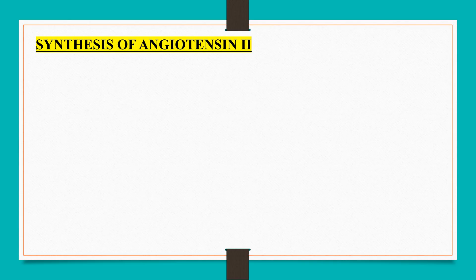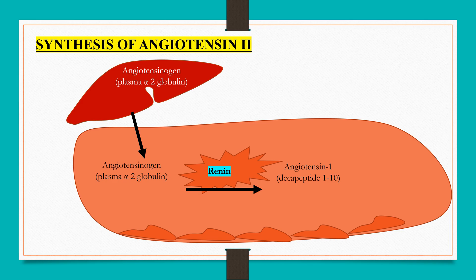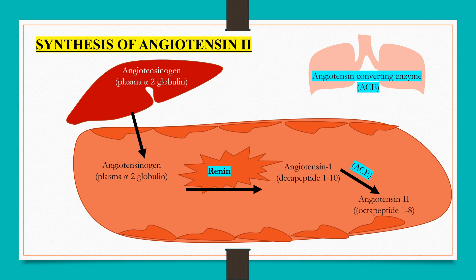The cascade of events involved in synthesis of angiotensin 2 through circulation: angiotensinogen is a protein which is readily released into the circulation from the liver. Renin cleaves angiotensinogen to angiotensin 1, which is a 10-amino acid peptide. Angiotensin 1 is further converted to angiotensin 2 in the presence of angiotensin-converting enzyme, which is present on the luminal surface of vascular endothelium and more abundantly in the lungs.